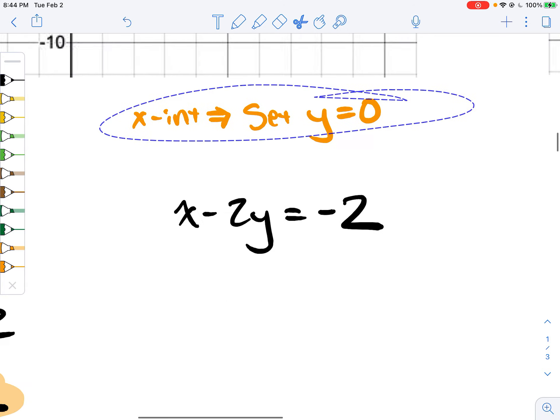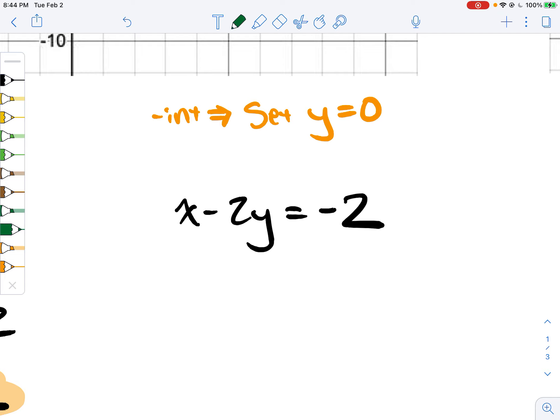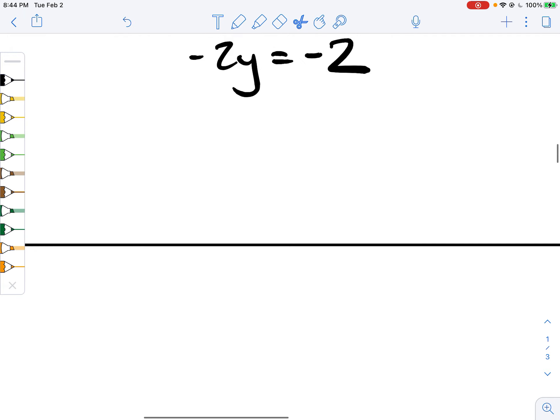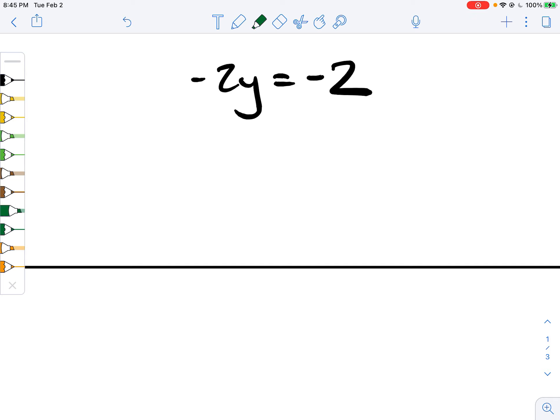So let's do the exact opposite of that. To find the y-intercept, let's set x equal to 0. So negative 2y equals negative 2. We divide by negative 2, y equals 1. So our y-intercept is 1. Remember, to find our y-intercept, we go on the y-axis right here. Since it's 1, we go up 1.